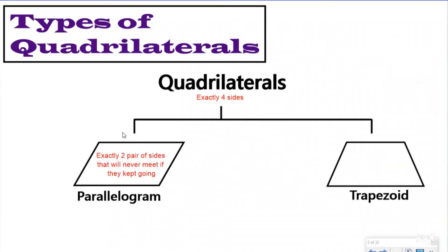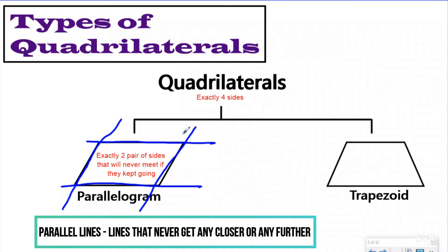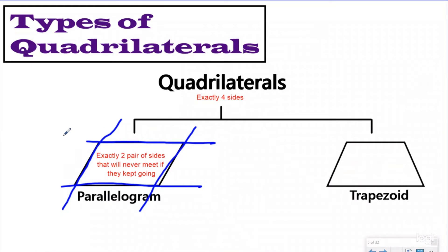A parallelogram has exactly two pairs of sides that will never meet if they keep going. The opposite sides, if we kept them going on forever and ever, would never meet and would never get any closer — that's one pair. The other pair of sides also would never meet. The vocabulary term you'll learn later for that is parallel. A parallelogram has exactly two pairs of parallel sides.